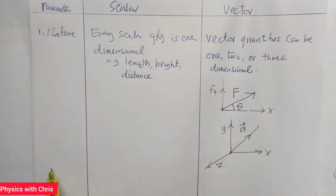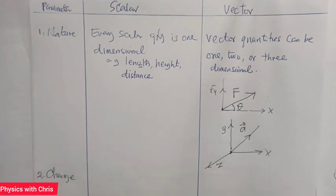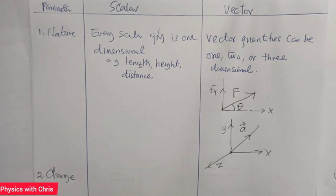The second parameter is change. A scalar changes only with a change in its magnitude — when the magnitude of the scalar quantity changes, the scalar quantity has changed. For a vector, a change is possible when the magnitude changes, when the direction changes, or when both the magnitude and direction change.